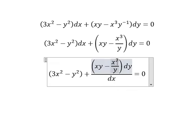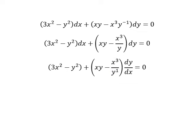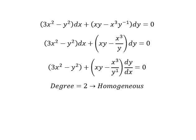So we can see that we have x squared, y squared, xy, x to the power of 3 divided by y to the power of 1 — so 3 minus 1 gives us 2. This is degree 2, so we can use the homogeneous method. I will put y equals vx.